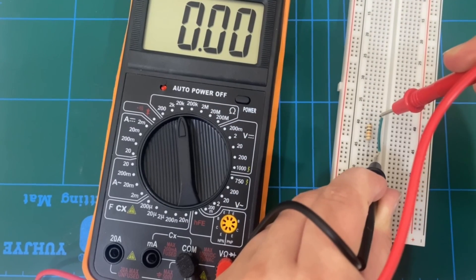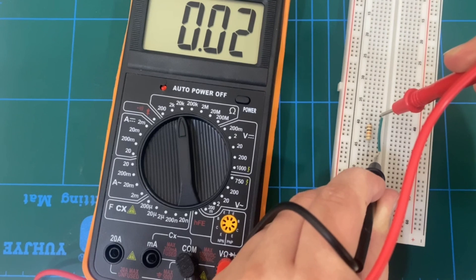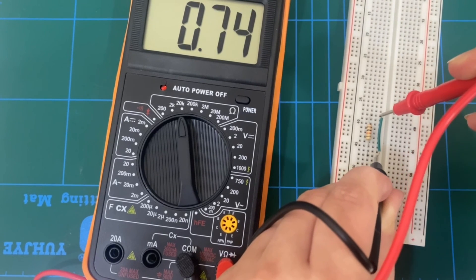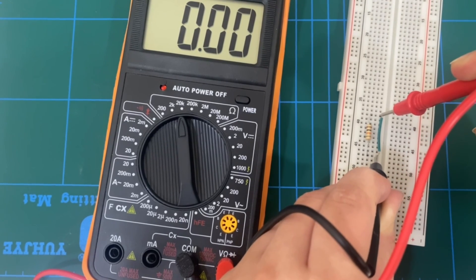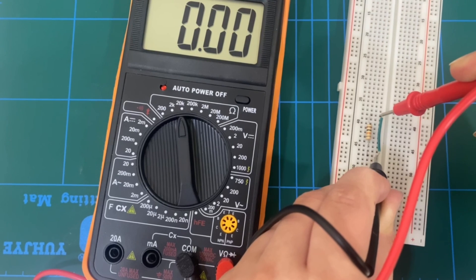And as we can see, we get a value of zero resistance displayed in the multimeter and that is because of the short circuit.